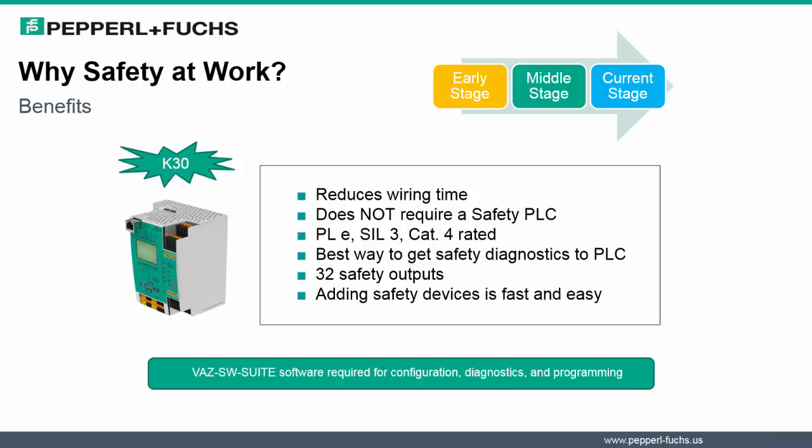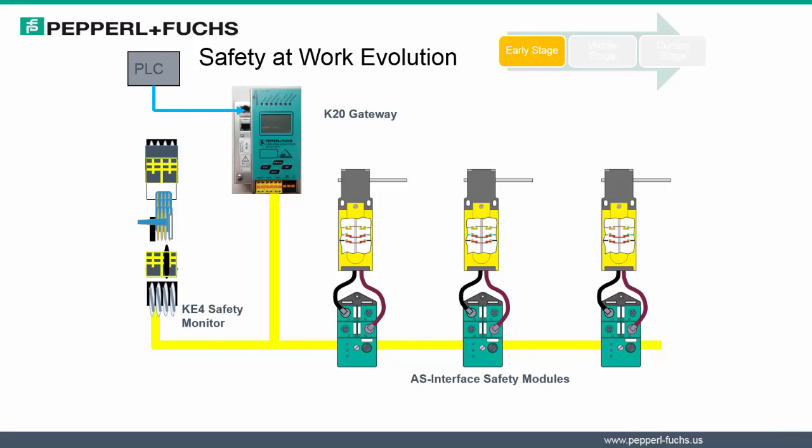There are a number of safety diagnostics available for monitoring within the PLC. There are 32 safety outputs available on our K30 gateways to be used. Just as we learned with AS Interface basics, adding safety devices is just as fast and just as easy. One last point to keep in mind is that specific software is needed for configuring, diagnosing, and programming your K30 gateways, as noted on the slide.